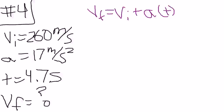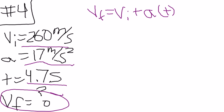Your givens are initial velocity, which is 260 meters per second, and acceleration of 17 meters per second squared. Your time is 4.7 seconds, and final velocity is unknown. To find final velocity,